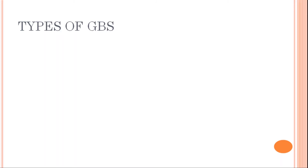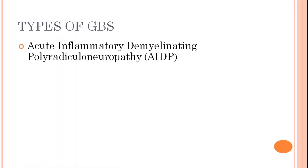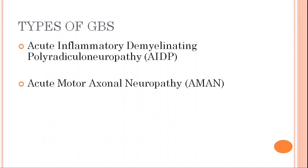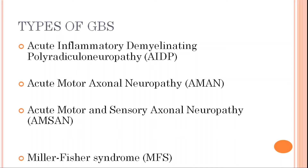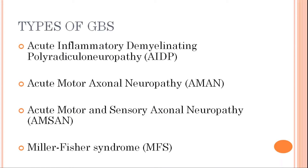Now, the types of GBS. There are basically four types of GBS. First is acute inflammatory demyelinating polyradicular neuropathy, that is AIDP. Second is acute motor axonal neuropathy, that is AMAN. Third is acute motor and sensory axonal neuropathy, and fourth is Miller-Fisher syndrome, that is MFS.